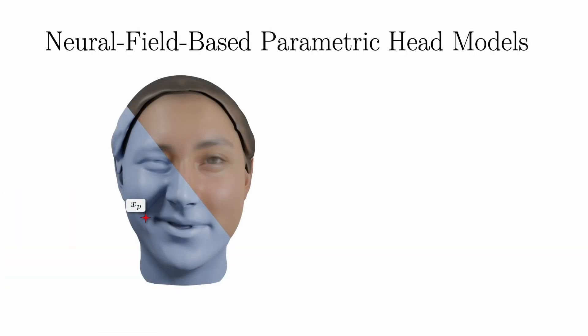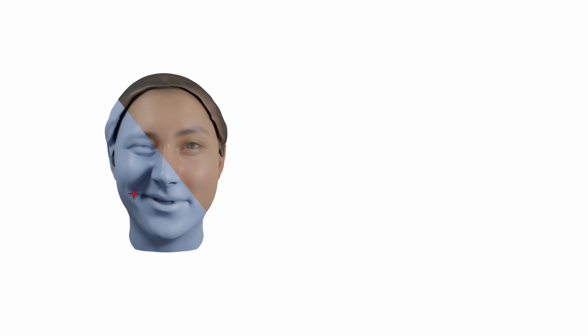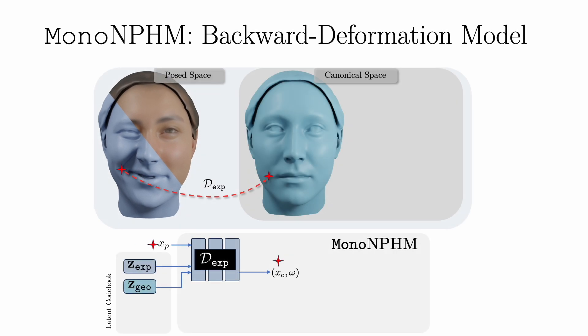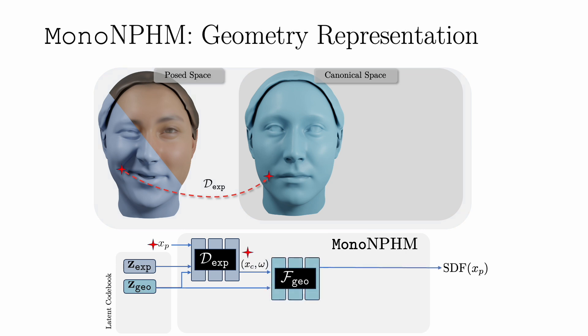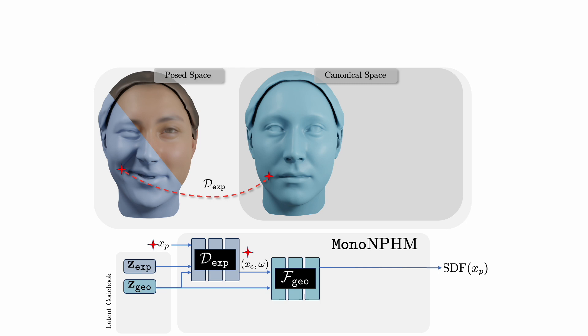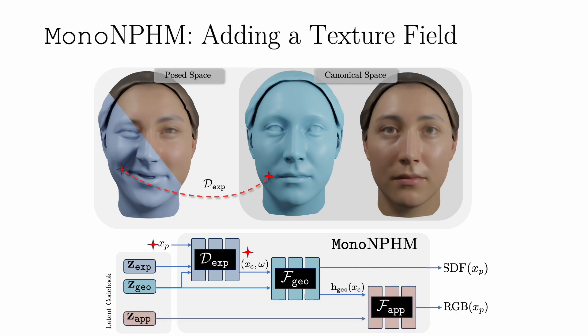Key to our tracking approach is an underlying neural parametric model. Given a point in PoE space, we backward warp it into canonical space using a neural deformation field. In canonical space, we represent geometry as an SDF. Appearance is modeled as a texture field conditioned on geometry features, enabling the semantics of the geometry to inform the location of colors — for instance, where the color of the lips should appear.